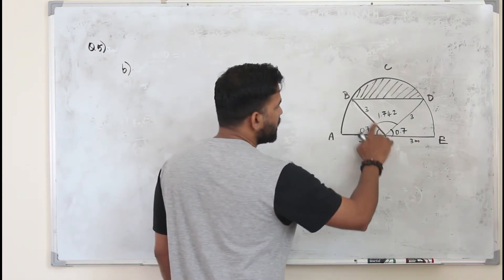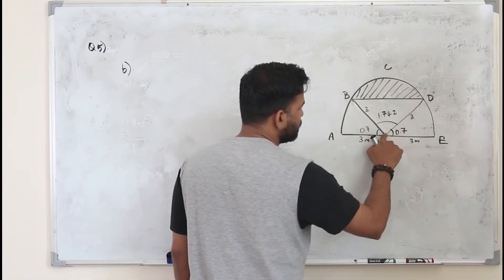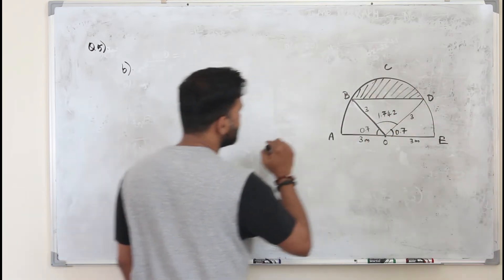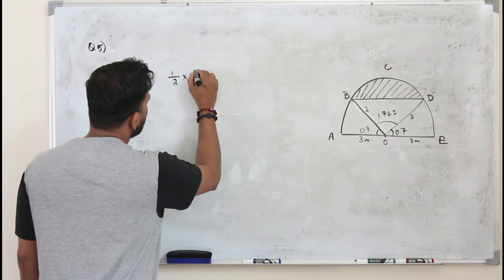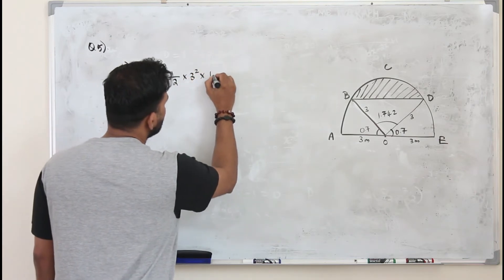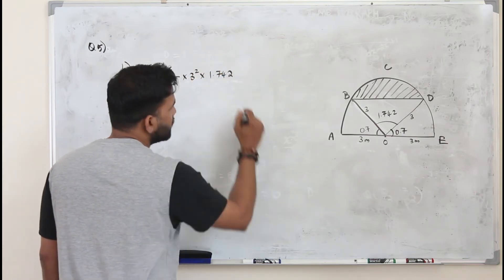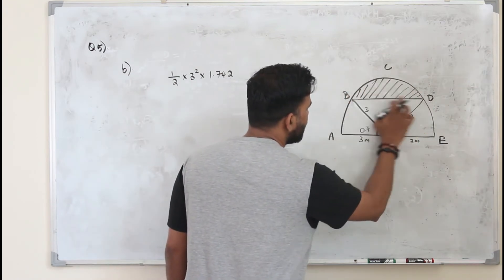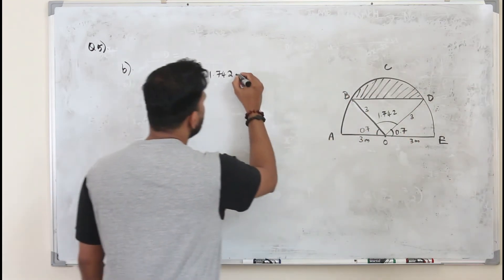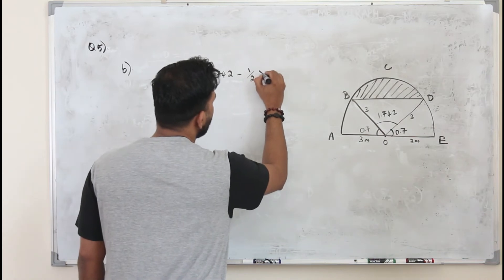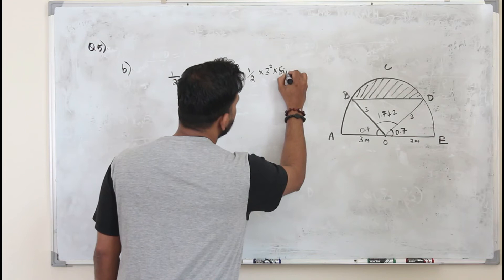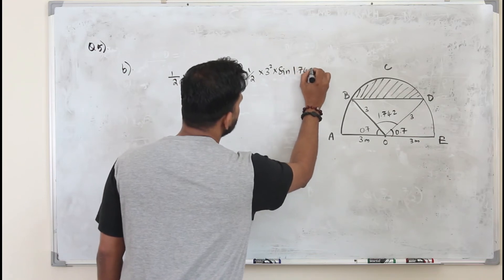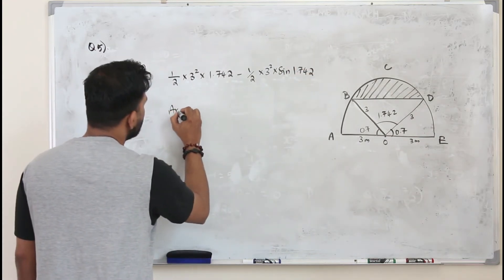Or you can just take this sector. Find the area of this sector which is half R squared theta, 1.74. That's area of this whole sector minus the area of a triangle, minus half AB sine theta, AB 3 times 3 sine 1.74.